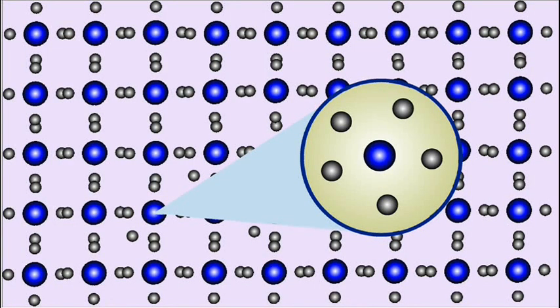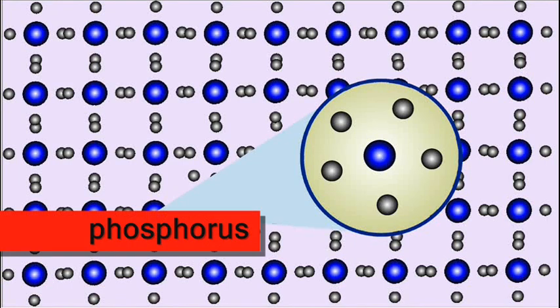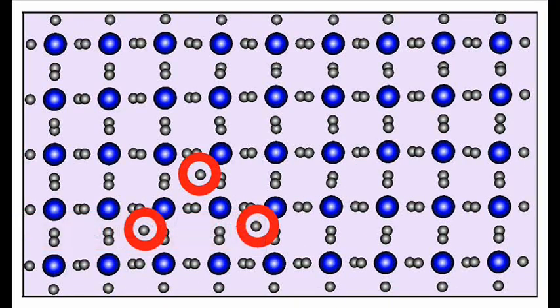Doping is done by adding pentavalent elements such as phosphorus. This creates extra electrons. This is called N-type semiconductor.